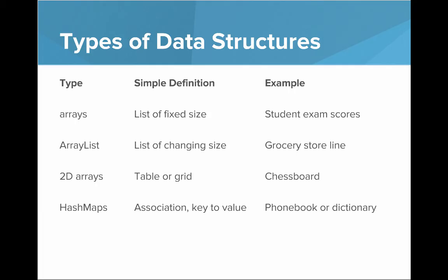First is an array, which is a list of fixed size — an example is storing student exam scores. Next is an array list, which is a list of changing size — an example is a grocery store line. Then there's a 2D array, which represents a table or grid — an example is a chess board. Finally, a hash map stores associations from key to value — examples include a phone book where you look up a number from a name, or a dictionary where you look up a definition from a word.